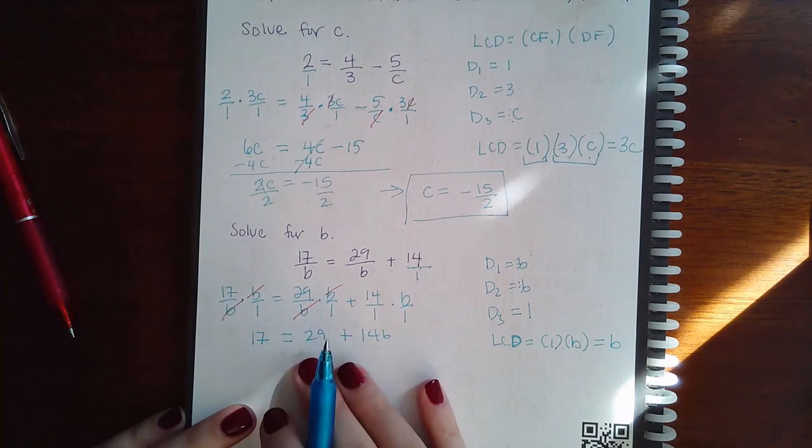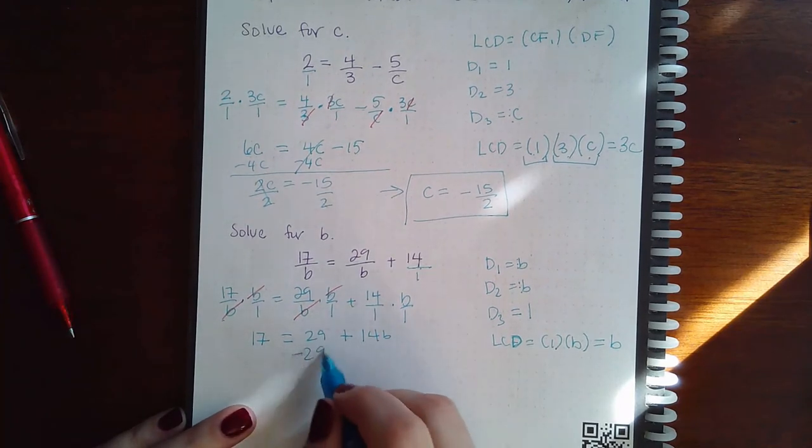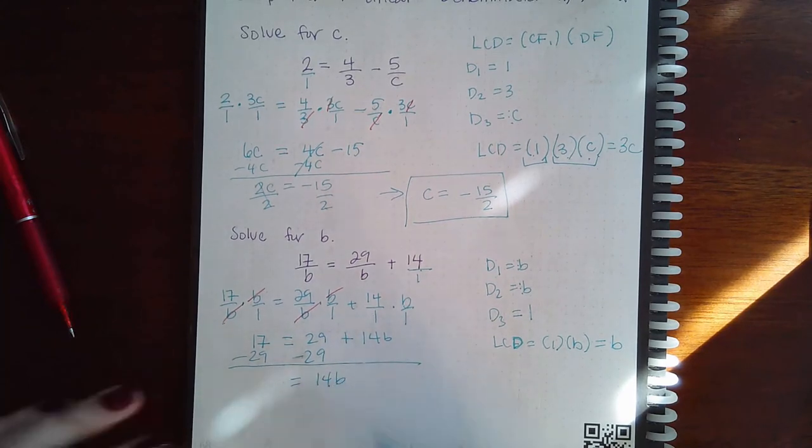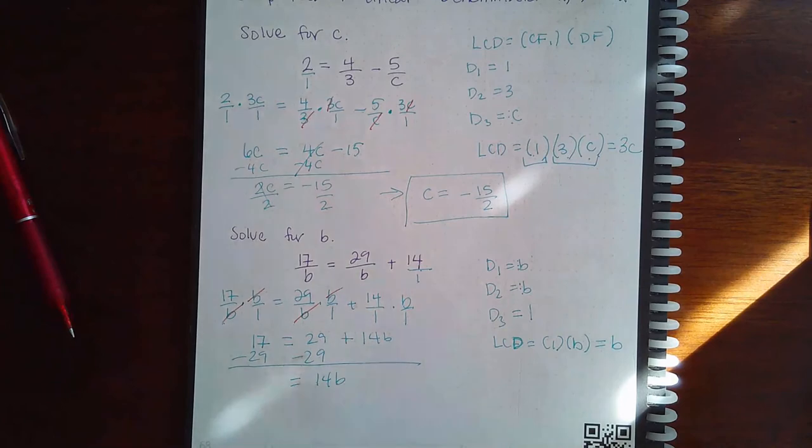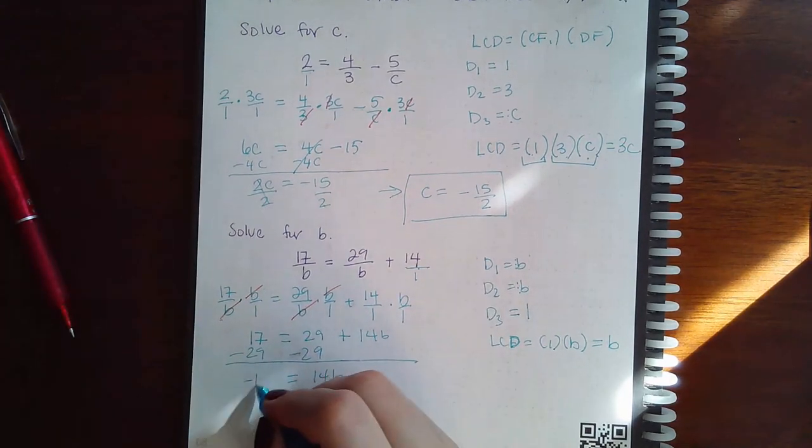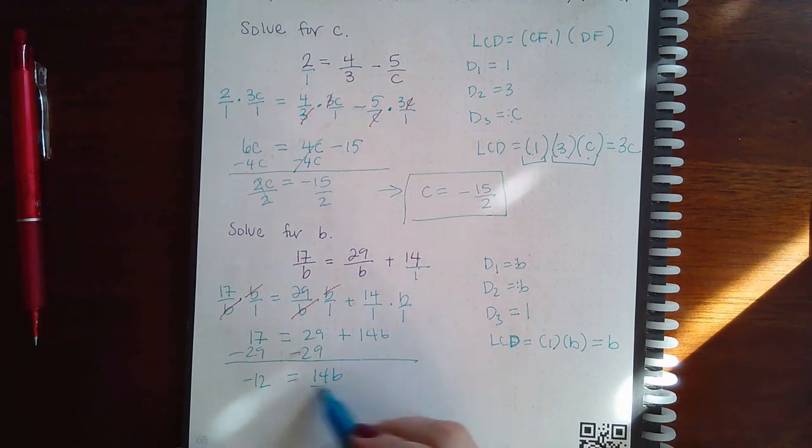So, then how do I solve this resulting equation? I'm minus 29 on both sides. I get 14B on the right, and on the left, just to be sure, I get negative 12 and then divide both sides by 14.